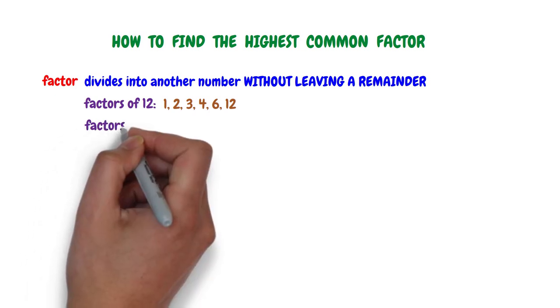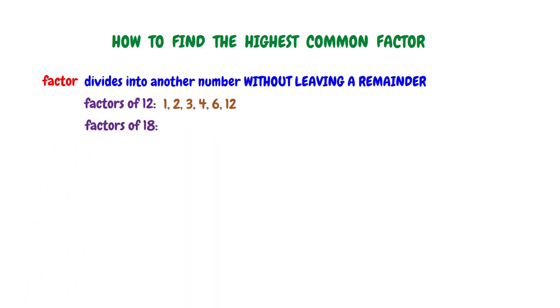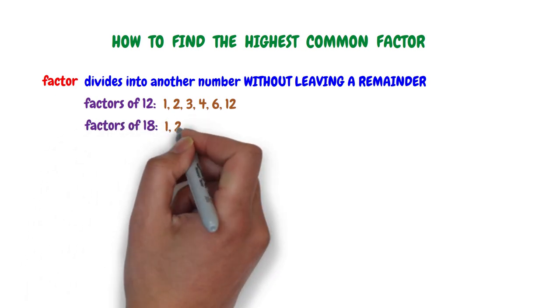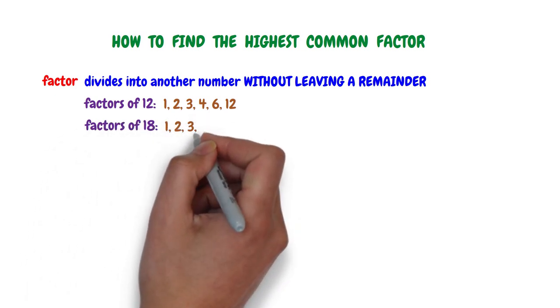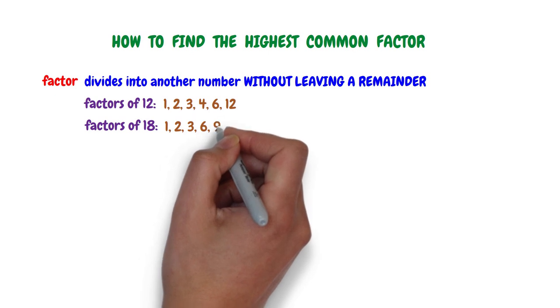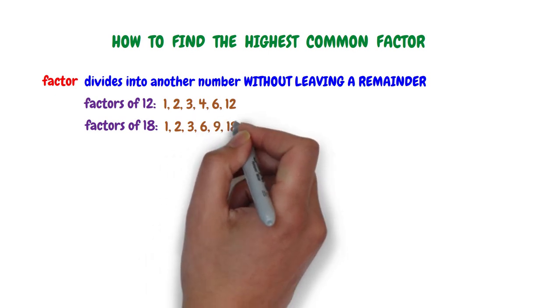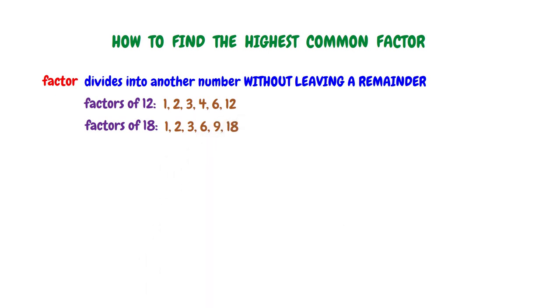Similarly, the factors of 18 are 1, 2, 3, 6, 9, and 18 itself, and all these numbers can be divided into 18 without leaving a remainder.